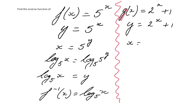To find the inverse, I swap the position of x and y. Then I have to make y the subject. So first, I'll take away 1 on both sides to get 2 to the power y.